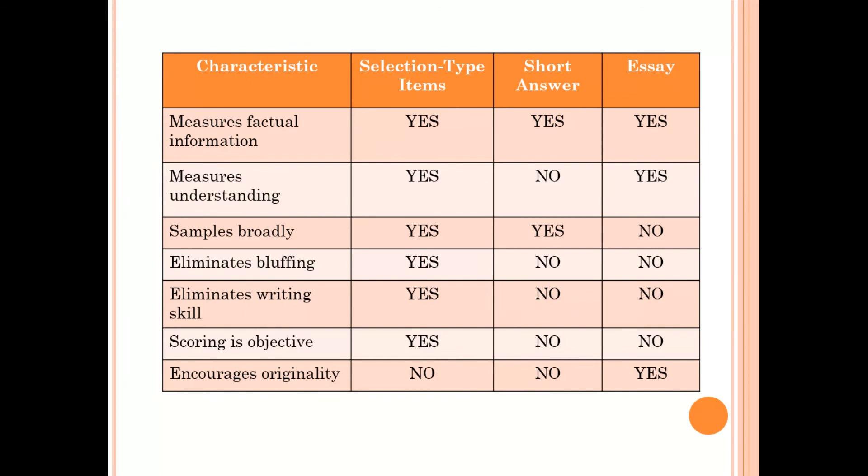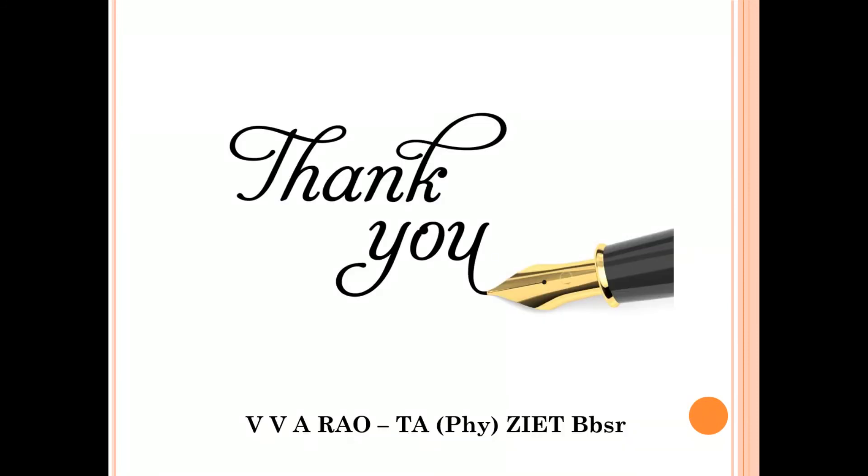When we classify, there's selection type and another type of questions. We are discussing short answer and essay. Now, this selection type items, where we can see on the screen, there are so many merits: measures factual information, measures understanding of the child, samples broadly, eliminates bluffing. Already we mentioned no tossing, no guessing. Eliminates writing skill, of course this is a loss to the child. Scoring is objective and it takes less time to assess a large sample. Thank you for watching this.